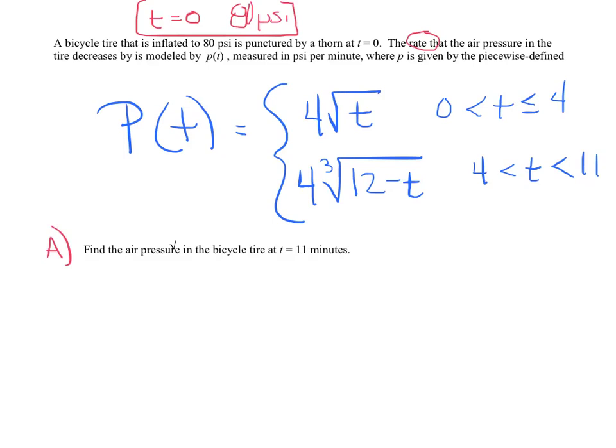The rate at which the air pressure in the tire decreases - notice that they said rate is given in PSI per minute. I want to note that this is PSI per minute and that this is a rate. Our question says find the air pressure at t equals 11. What do you want your units to be? You just want PSI, not PSI per minute.